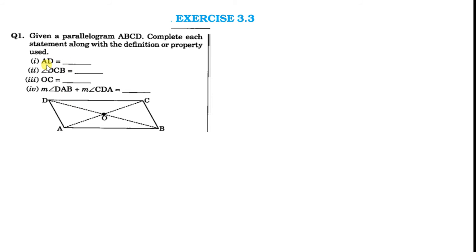Now, AD equals what? We have to tell which side AD will be equal to. Since the opposite sides of a parallelogram are equal and BC is opposite to AD, so AD will be equal to BC.